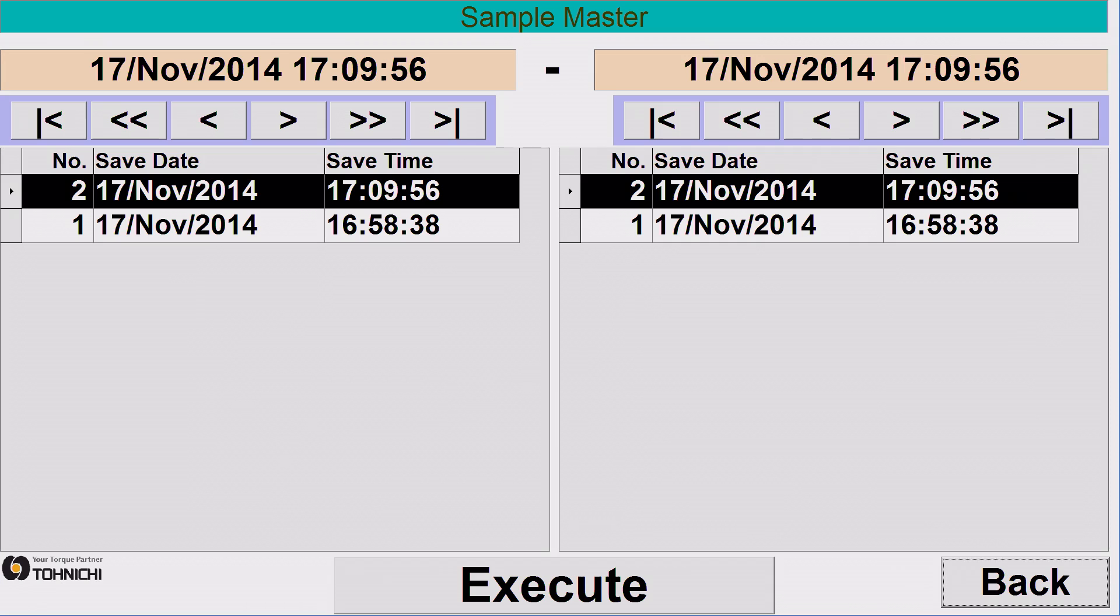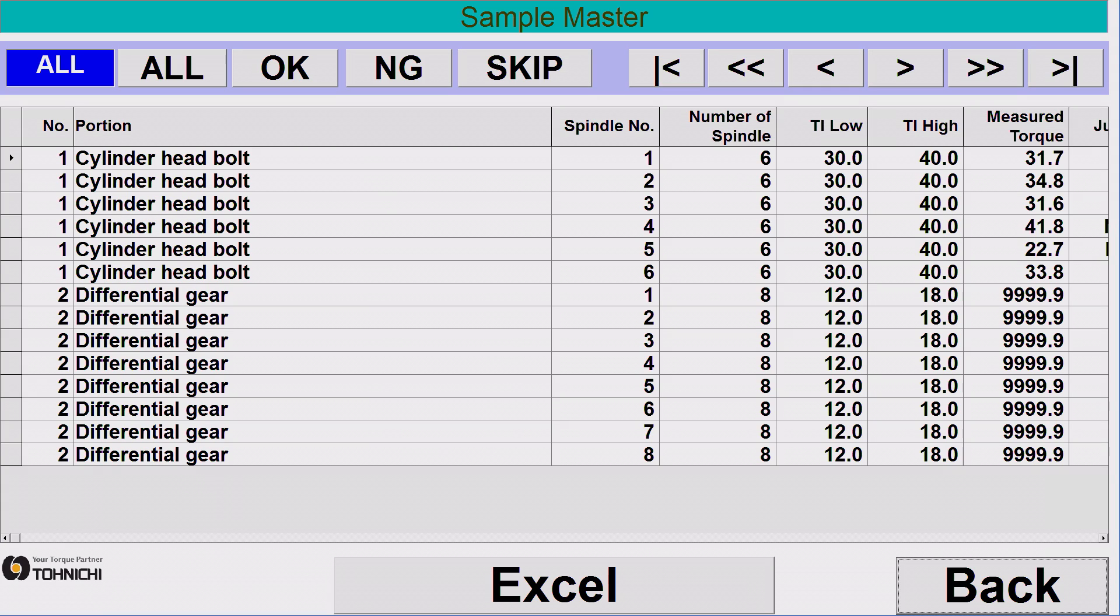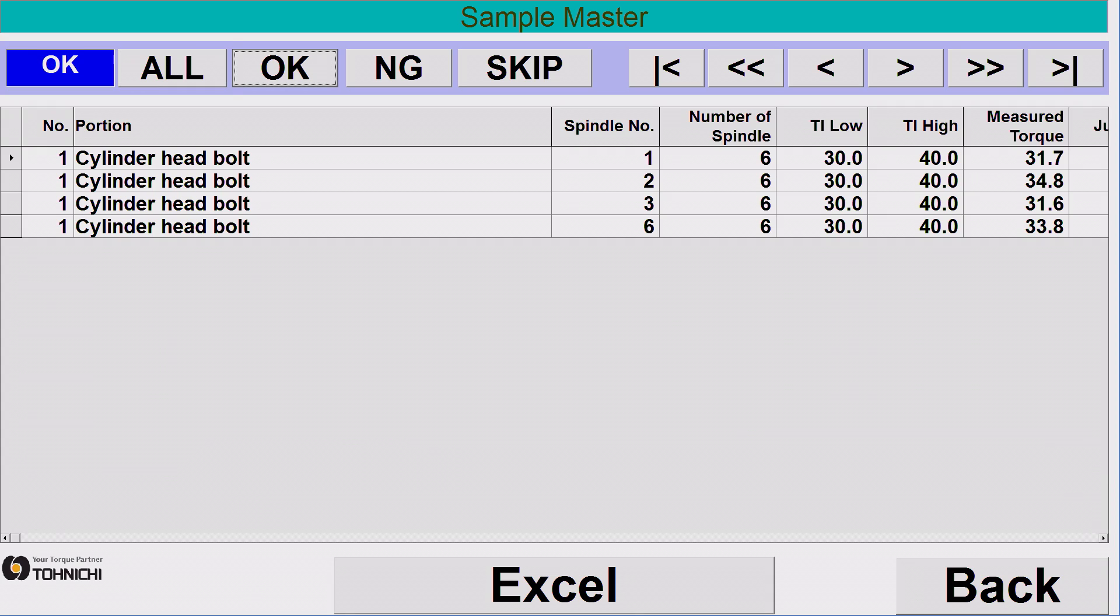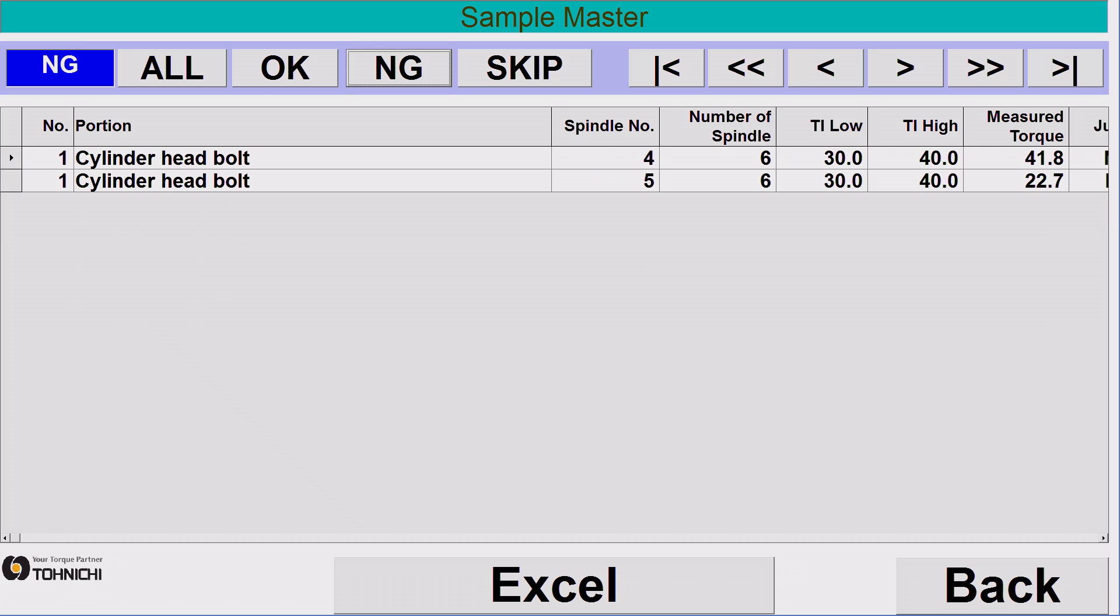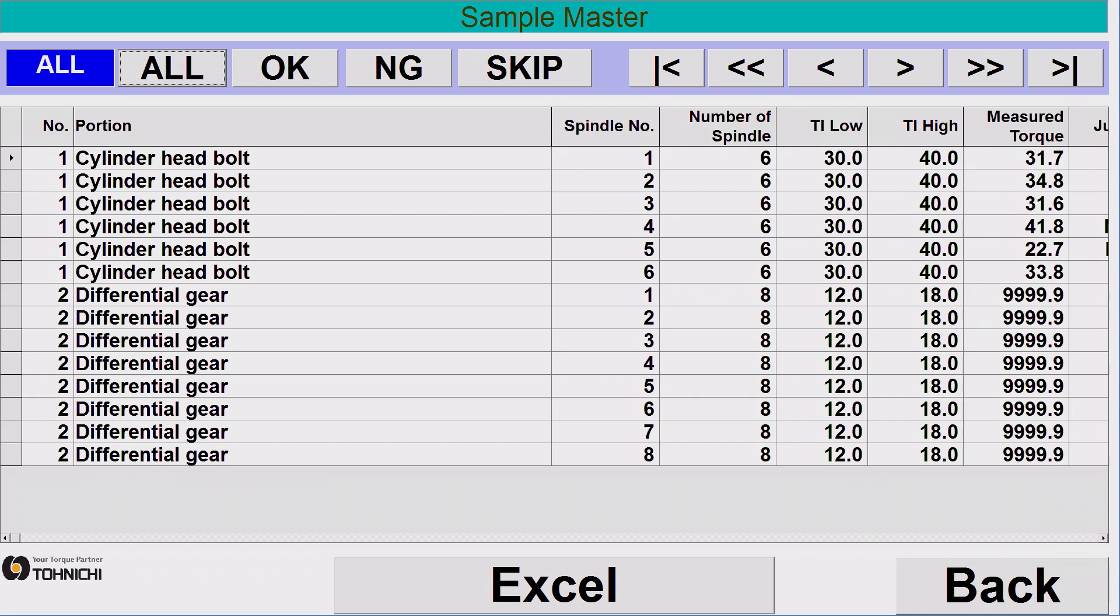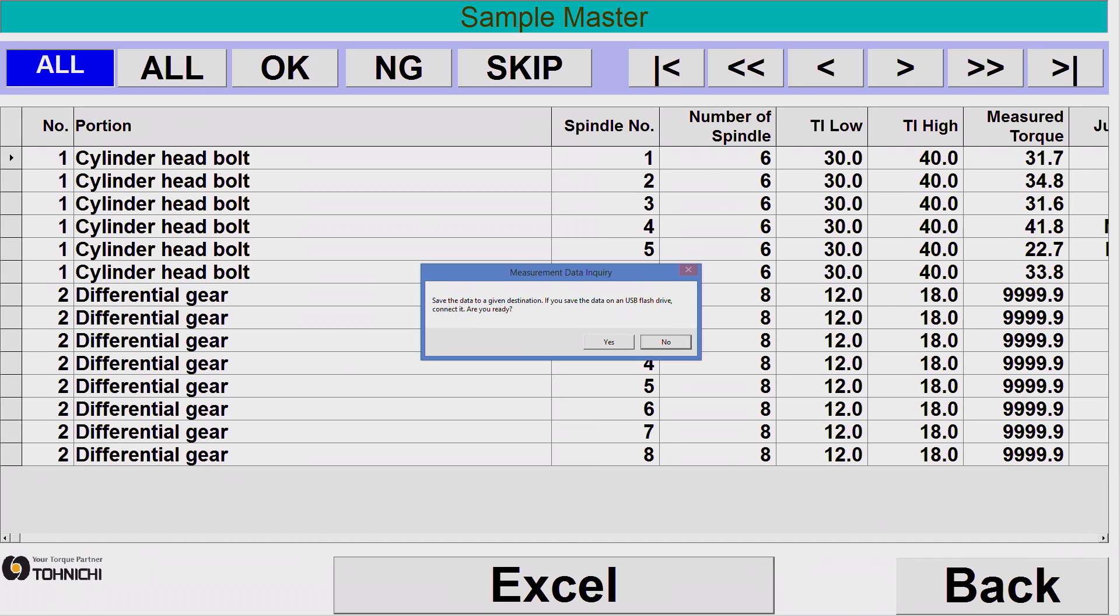Collected data can be sorted for all data, OK, NG data and past portions. On the Excel sheet, portion name, spindle number, high and low limit values, torque value, date and time are associated with each portions and spindles for traceability.